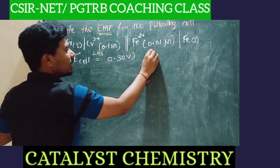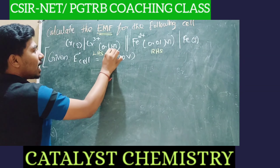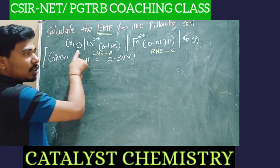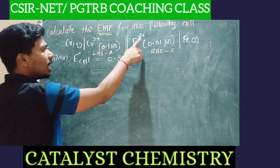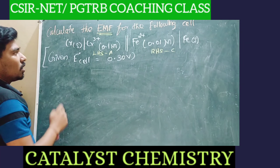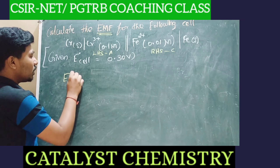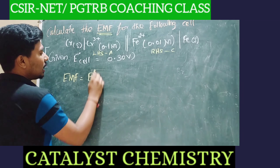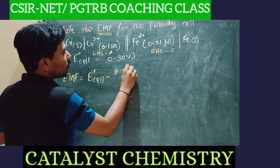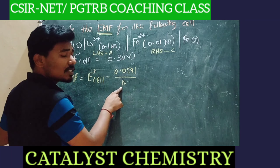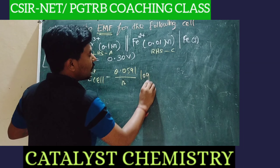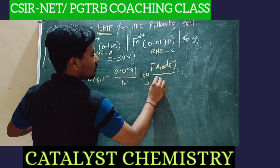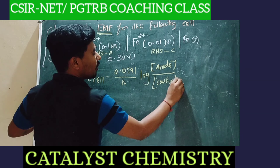We know that the left-hand side of this electrochemical cell is anode (LHS) and the right-hand side is cathode (RHS). So LHS is oxidation and RHS is reduction. Chromium goes to Cr³⁺ — so it is oxidation. Fe²⁺ goes to Fe — so it is reduction. According to the Nernst equation: EMF = E⁰cell − (0.0591 / N) × log([anode] / [cathode]).